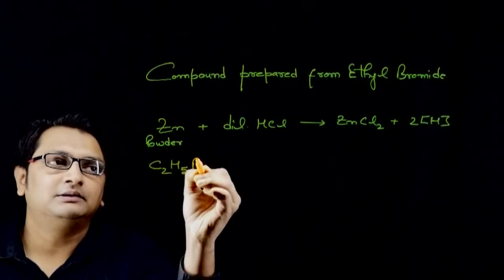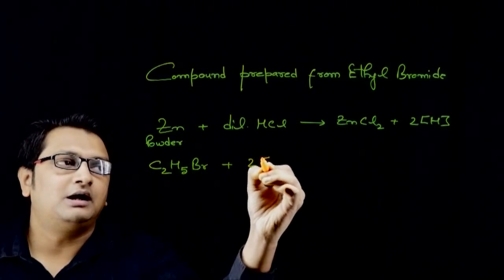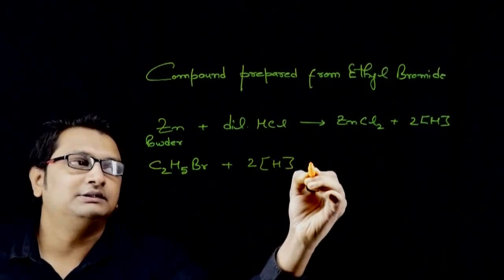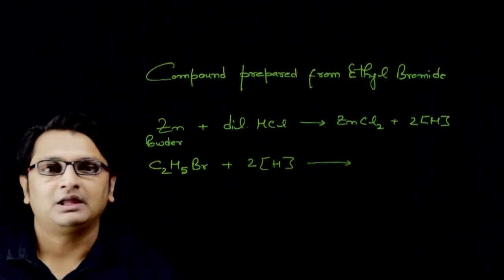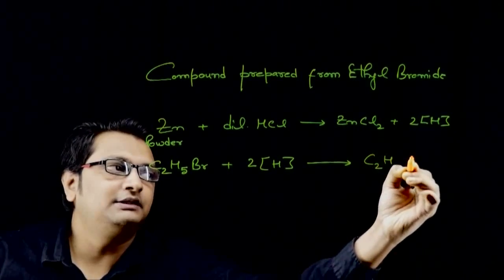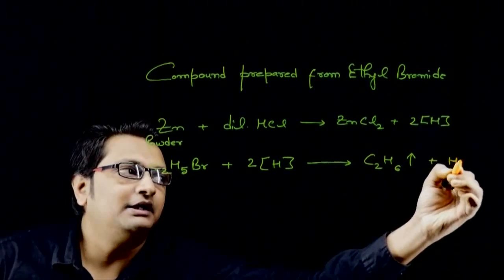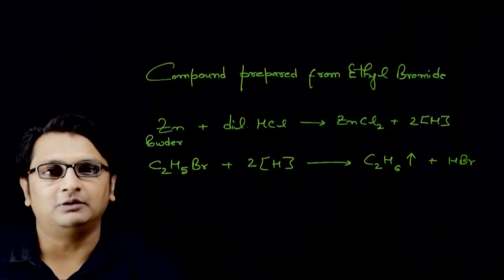Ethyl bromide, due to highly reactive nascent hydrogen atoms, gets reduced to form ethane gas, and along with it hydrogen bromide is formed.